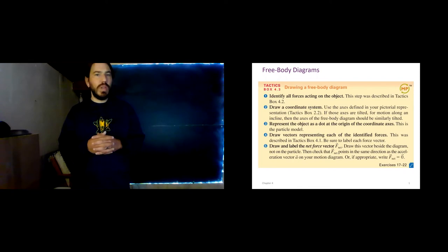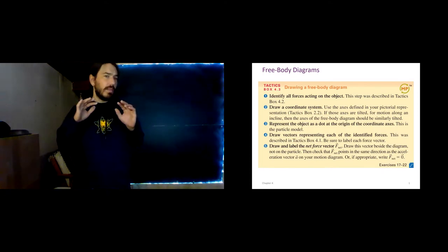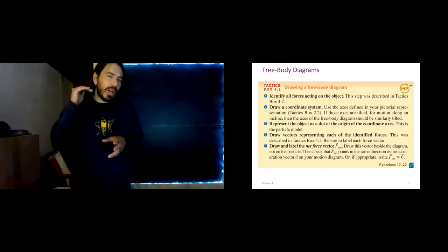We learned about motion diagrams in the first week, and then we kind of moved past them. They're still a good tool to have, but we've learned more sophisticated ways of representing this information with position versus time graphs, velocity versus time graphs, and acceleration versus time graphs, and then as well as algebraically with the big five equations. Free body diagrams are not like that. We're going to be using free body diagrams in this chapter, in the next chapter, the one after that. We're going to be using them all semester.